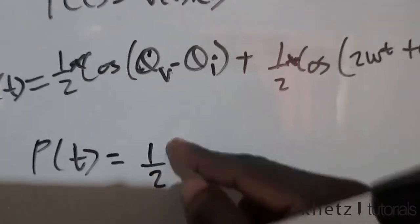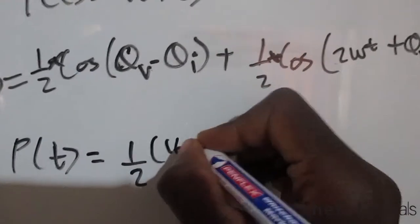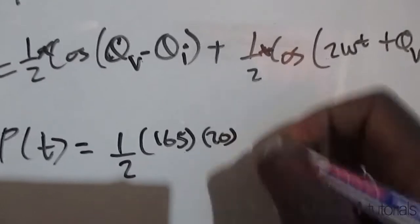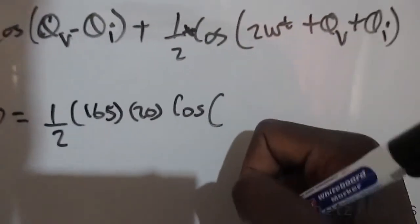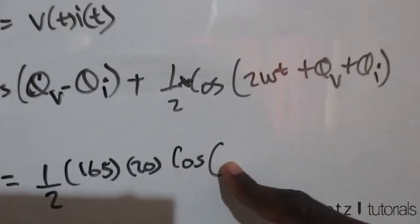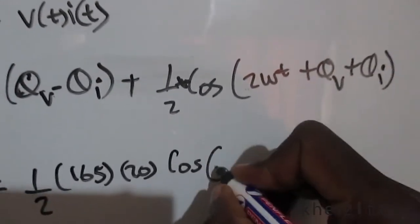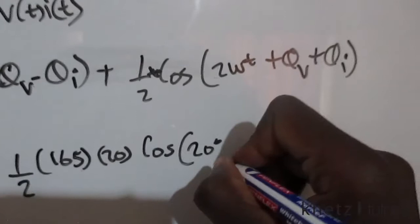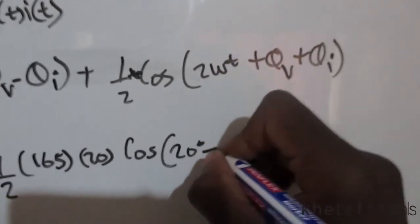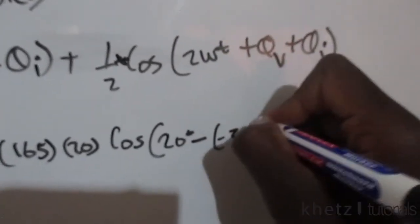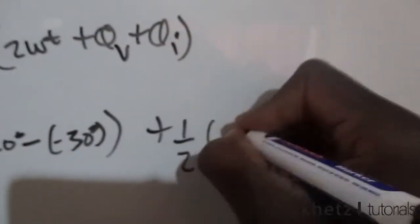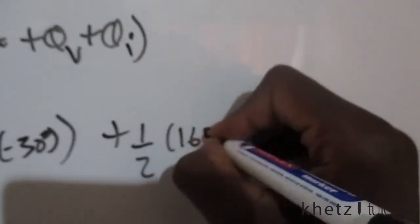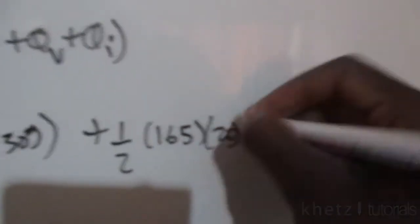So doing this you're basically going to have half amplitude 165 multiply by 20 then you're going to have your cosine theta which is associated with your voltage is 20 degrees and then you're going to subtract the other one which is basically negative 30 degrees.